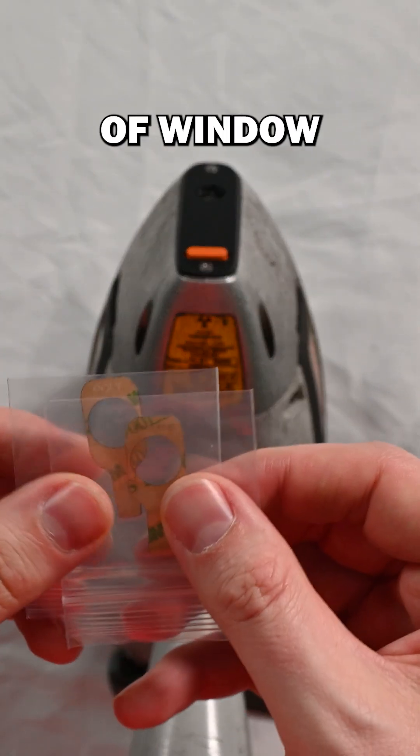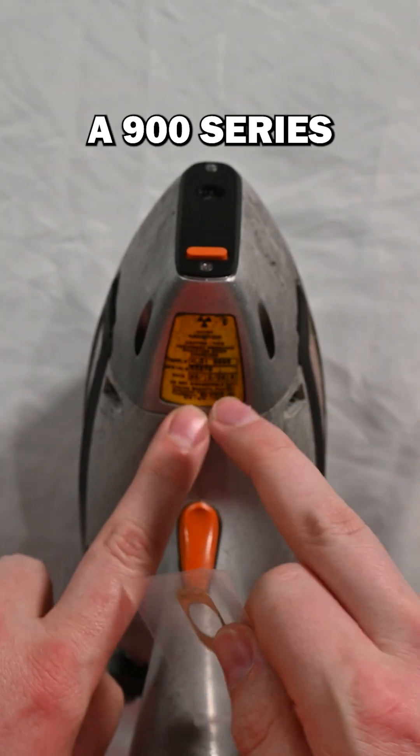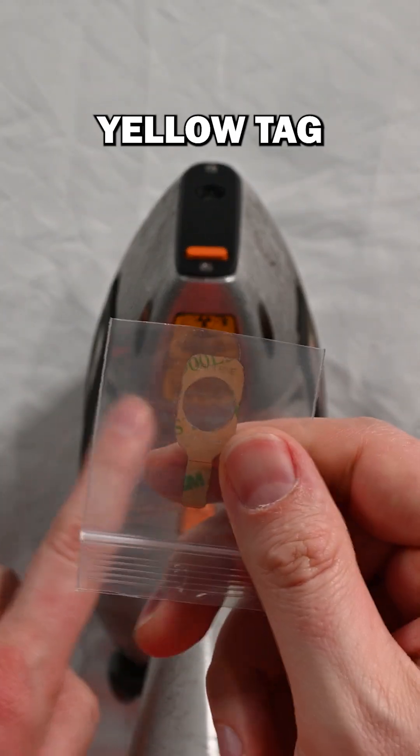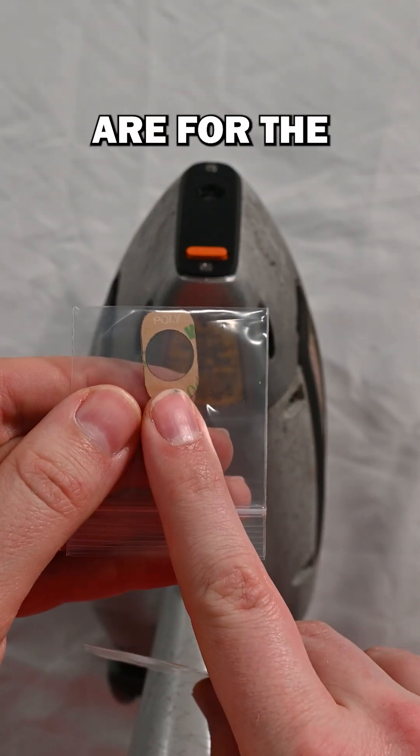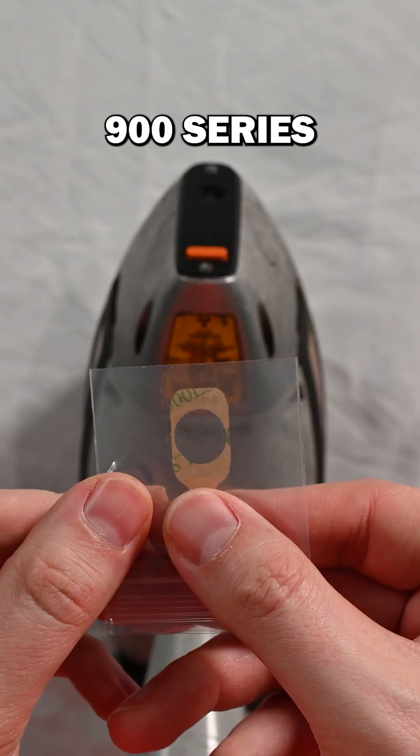So the next thing we need to do is figure out what type of window we need to change, and this is a 900 series which I can read here on this yellow tag. If you have an 800 series, you'll need a different window. The polypropylene are the 800 series and the proline is for the 900 series.